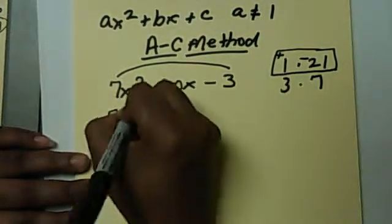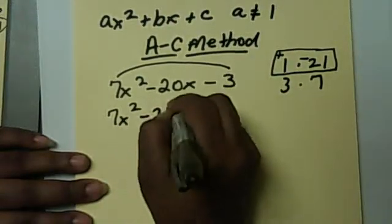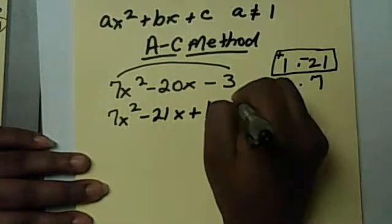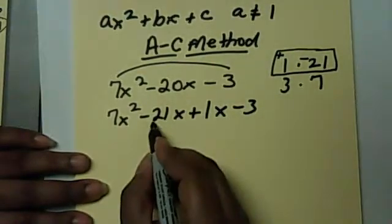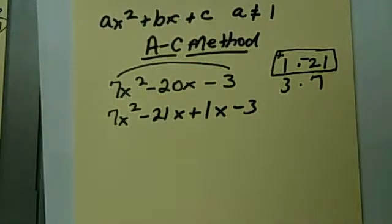In the AC method, you use these two to rewrite the middle term so that you can factor by grouping. So you have 7x squared, we're going to have minus 21x, plus 1x, minus 3. What does that do? Look, this negative 21 and that positive 1x gives you that negative 20.